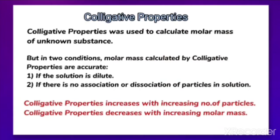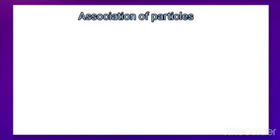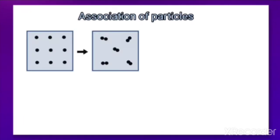The colligative property method used to calculate molar mass of solute is accurate only if the solution is dilute and if there is no association or dissociation of particles. Let us now discuss what association and dissociation of particles mean and how they affect the determination of molar mass. First, let us discuss the association of particles.